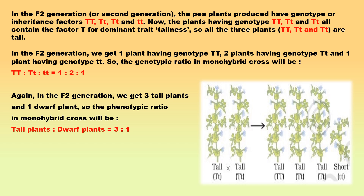In the F2 generation, we get one plant having genotype TT, two plants having genotype Tt, and one plant having genotype tt. The genotypic ratio in monohybrid cross will be 1:2:1. In the F2 generation, we get three tall plants and one dwarf plant, so the phenotypic ratio in monohybrid cross will be tall to dwarf = 3:1.